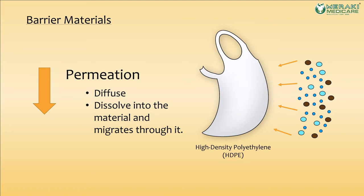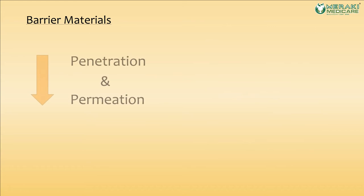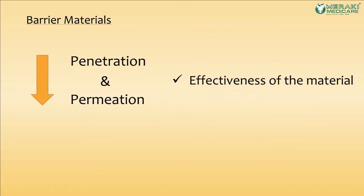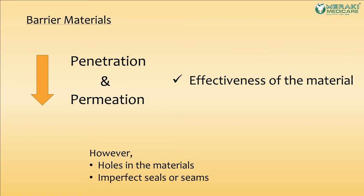One PPE material that has low penetration and permeation is high density polyethylene (HDPE). The lower the penetration and permeation, the higher the effectiveness of the material. However, when there are holes in the materials, or imperfect seals or seams on the PPE, it will reduce the effectiveness of protection because hazardous substances can pass through the openings and potentially enter the body.